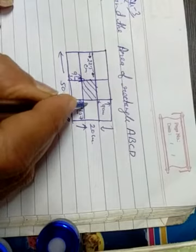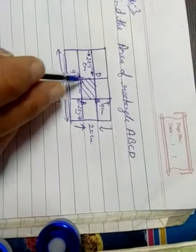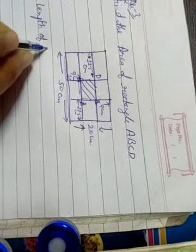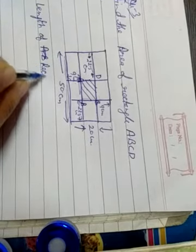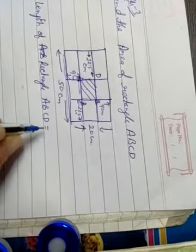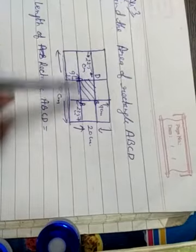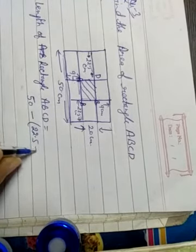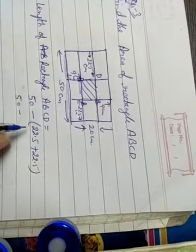Question 3 — find the area of rectangle ABCD. This is a rectangle and we need to find its area. The measurement is not given directly. We can see 22.5 on one side and 22.5 on the other, with a total of 50 cm. So: length of rectangle ABCD = total minus the two parts = 50 minus (22.5 plus 22.5) = 50 minus 45 = 5 cm.